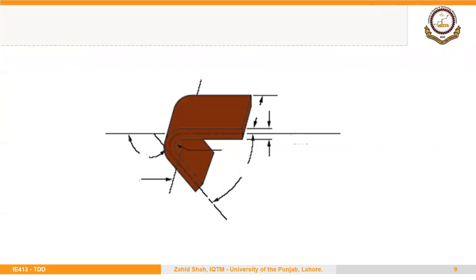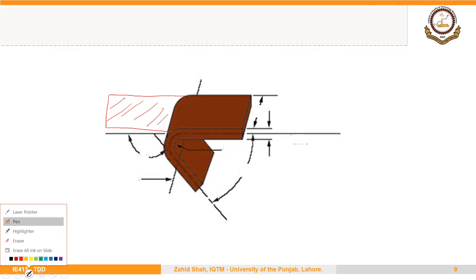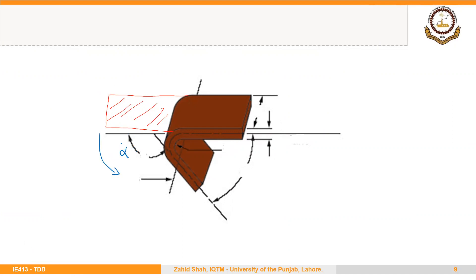With the help of a simple figure we will try to understand some basic terminology of a bent part. Initially we have a straight blank, and that blank is bent to some angle. The starting position of the blank is bent through an angle called the bend angle — let's call it alpha. The opposite angle is called the included angle, alpha dash.